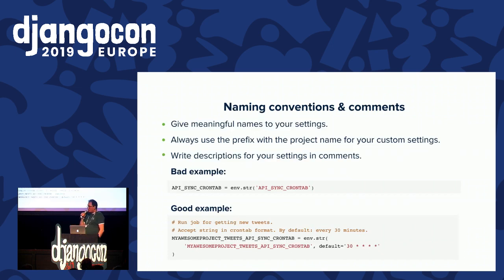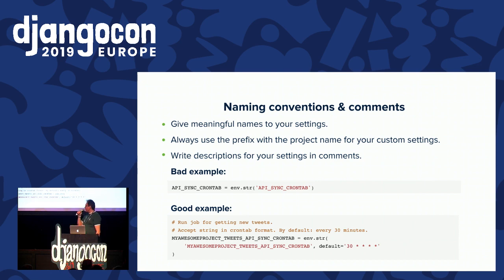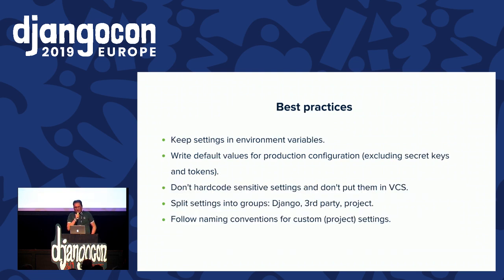As we all know, naming variables is the hardest part of development, and this applies to settings too. We can't apply rules to Django or third-party settings, but we can follow simple rules for our custom settings: give them meaningful names, use a prefix with the project name, and write descriptions. To quickly summarize: keep settings in environment, don't hard-code, split settings into groups, and follow naming conventions.